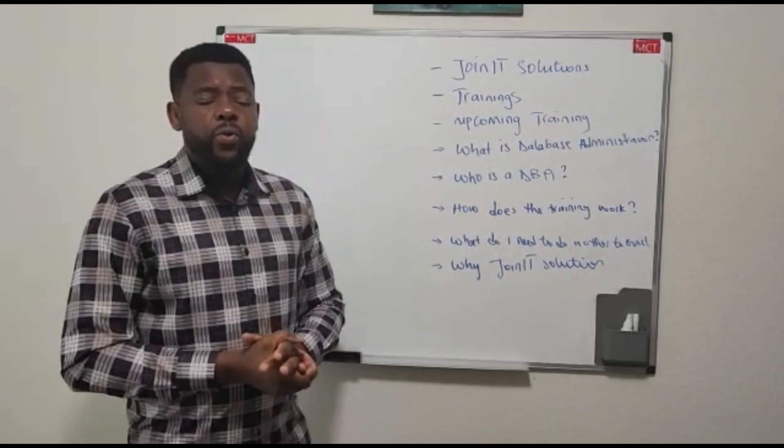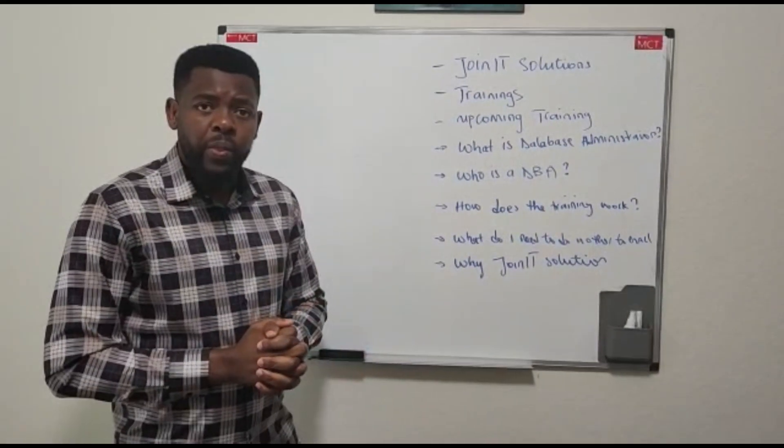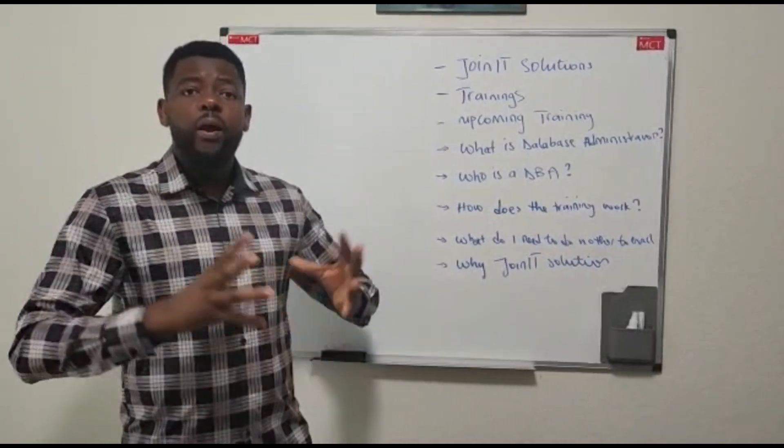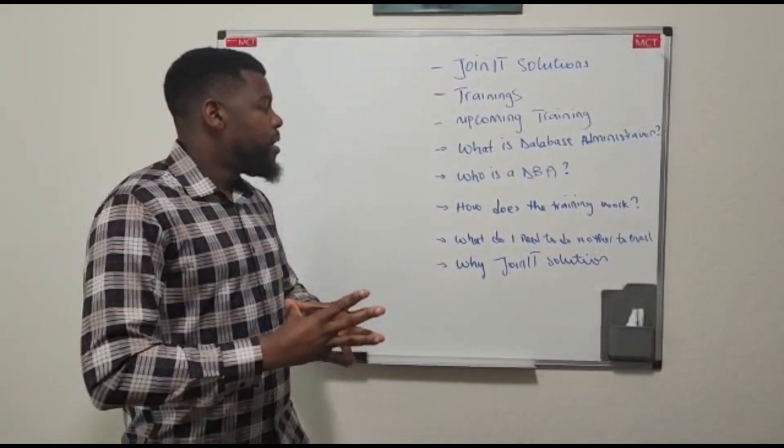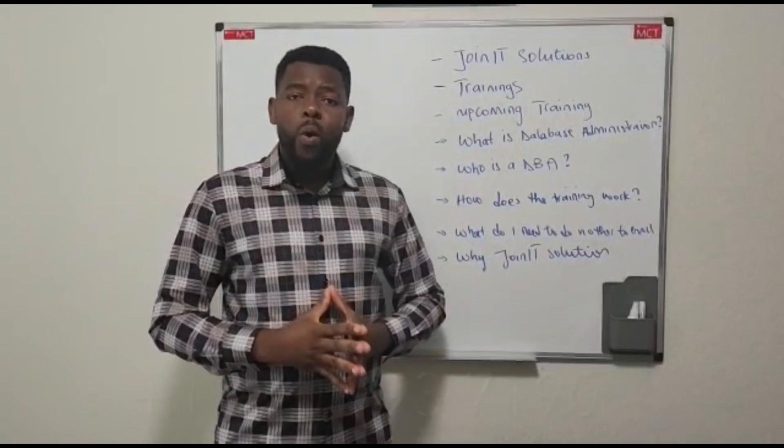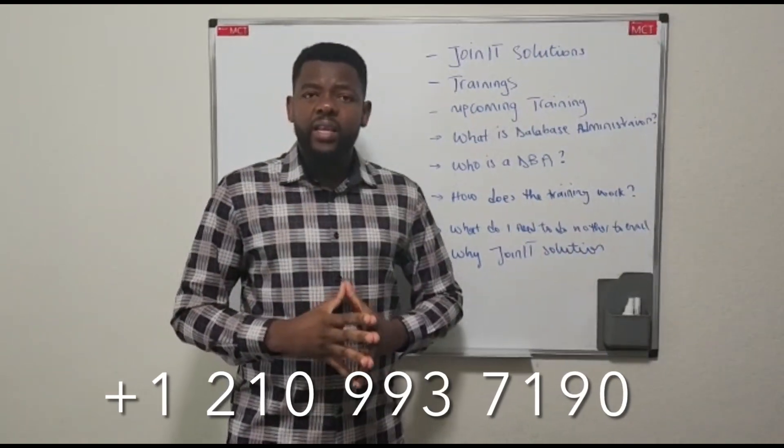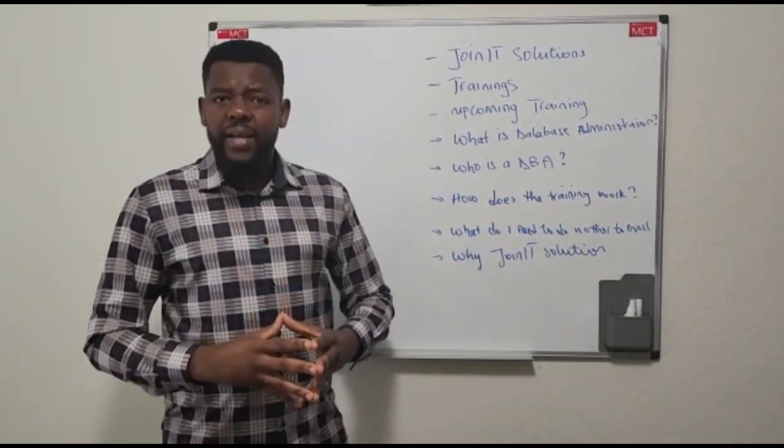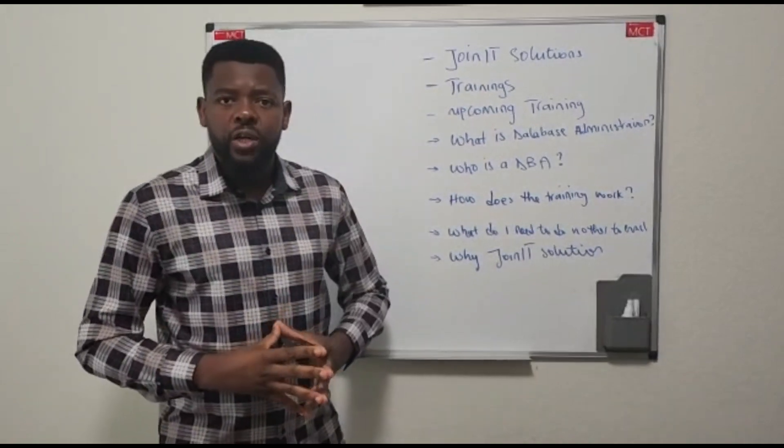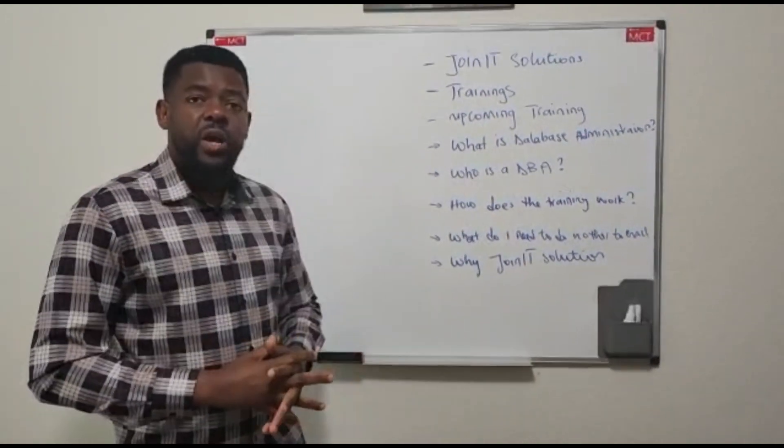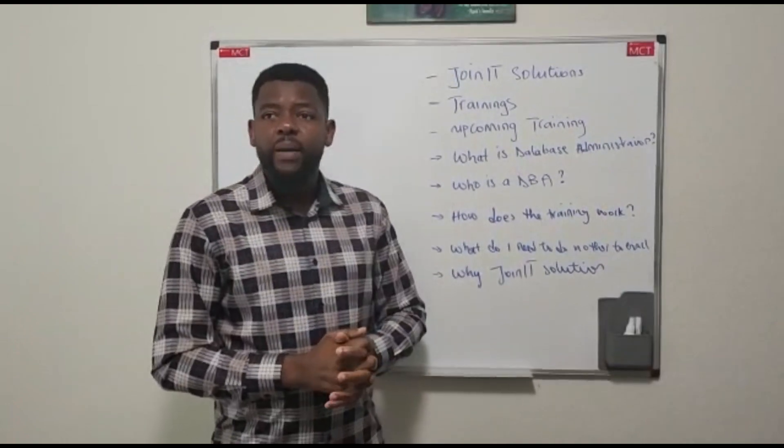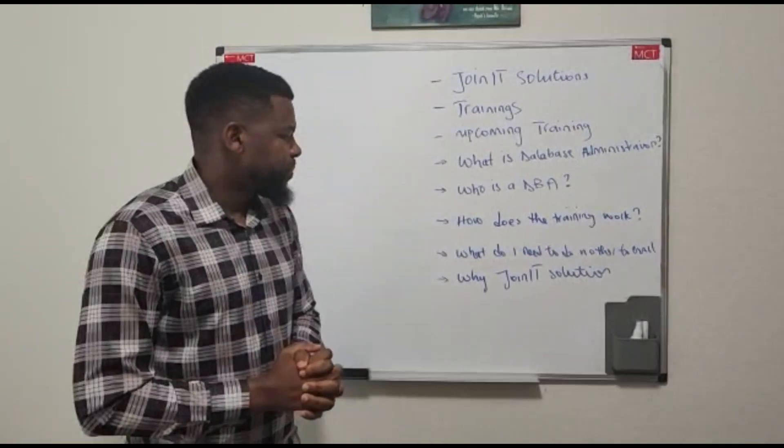Once you do that, we add you in the orientation group. So another thing you need to do to get all information, send a message to 210-993-7190. That is the JoinIT official phone number. Once you send a message, they are going to get you and add you in our WhatsApp group for the next training.